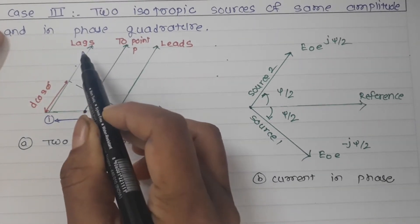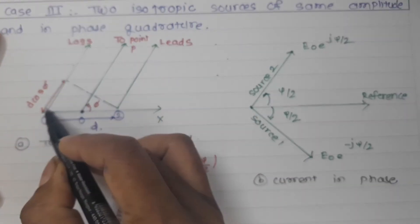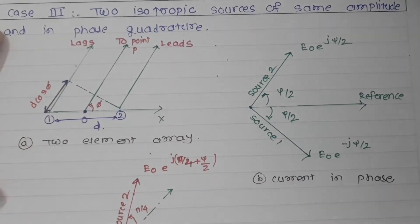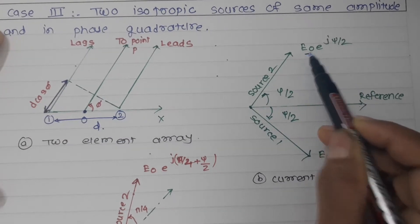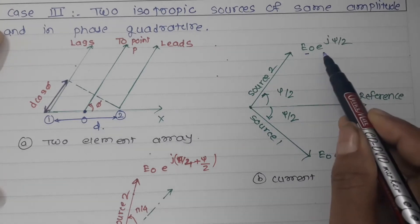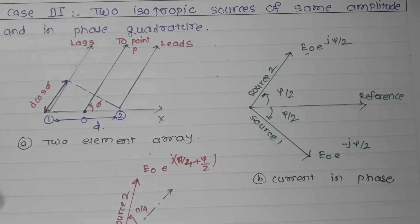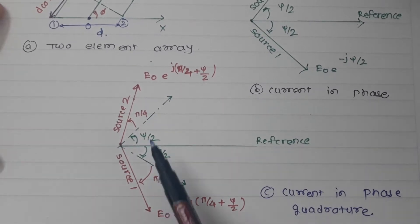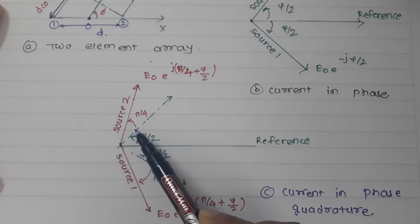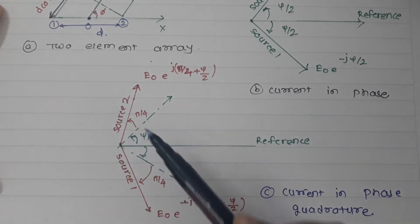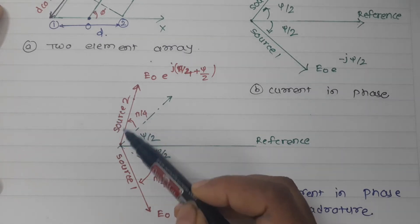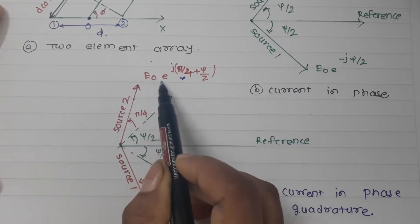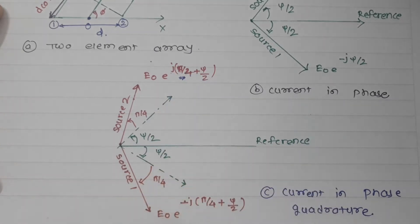Source one will lag source two, and the path difference is d·cos(φ). When currents are in phase quadrature, there is a phase shift of π/4. So source two has the field E₀·e^(j(π/4 + ψ/2)) and source one has E₀·e^(-j(π/4 + ψ/2)). These are the fields produced by the two elements having quadrature phase.